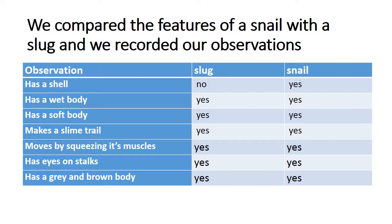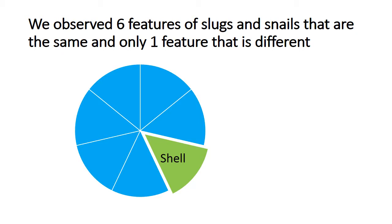When we came back, I created a simple pie graph to show that we found six similarities and one difference between slugs and snails — that was what we could observe from our field work.